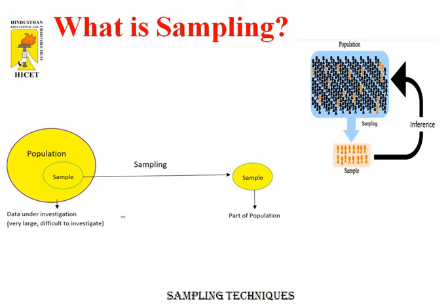The sample is the group of elements who participated in the study. Let us take an example of COVID-19 vaccine clinical trials. It is very difficult to conduct the trials on the entire population as it deals with time, money, and resources. So in research methodologies, sampling is a method that helps researchers infer information about a population based on results from a subset of the population without having to investigate every individual.